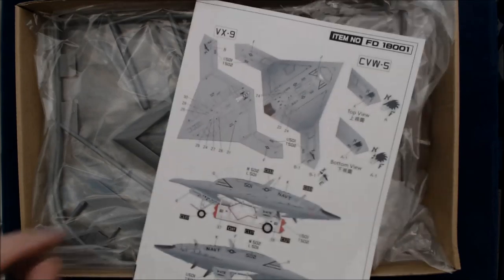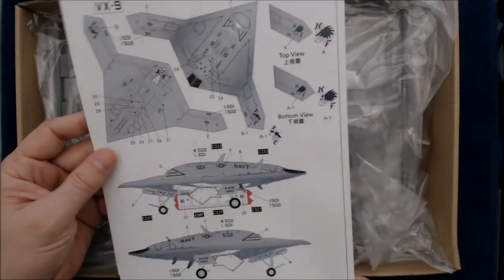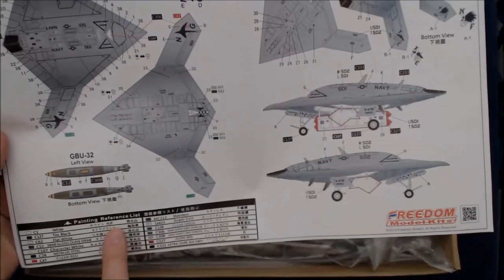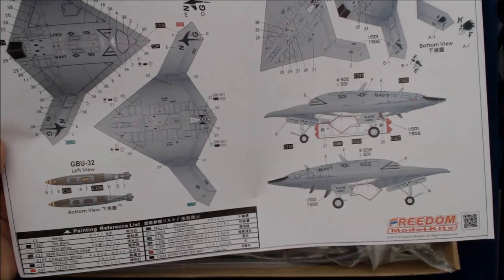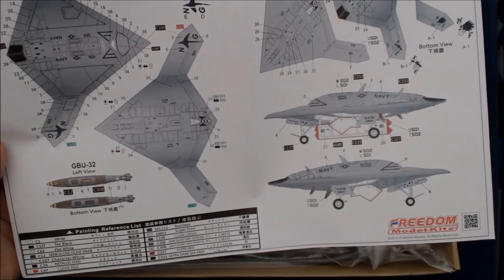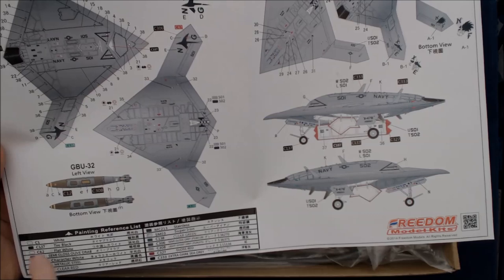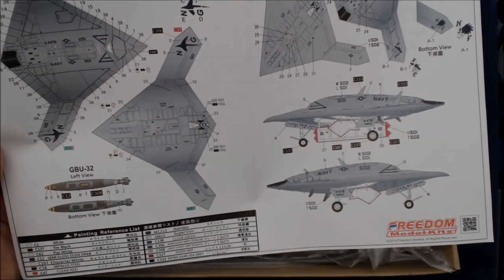And then we have a color marking and layout guide here. Two-sided. Then they have a painting and reference list down here at the bottom with Chinese and Japanese, as well as English, obviously. And it just lists like C1, C37, so I'm not sure which paints they're actually using. It doesn't say.